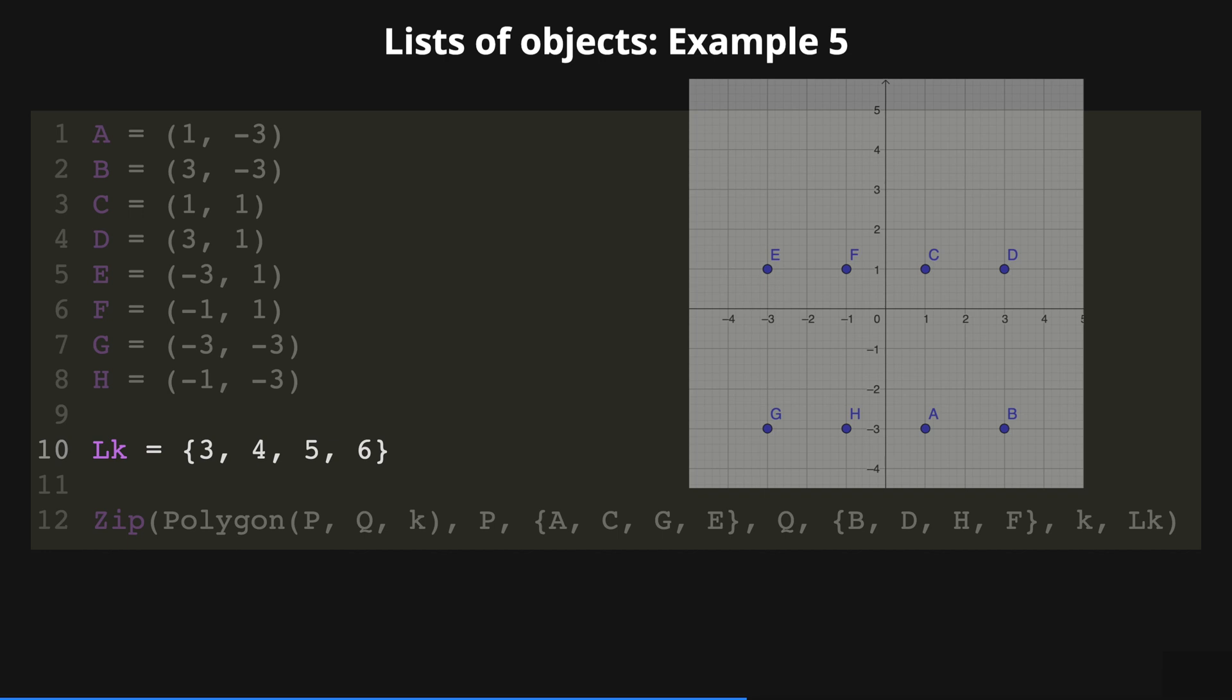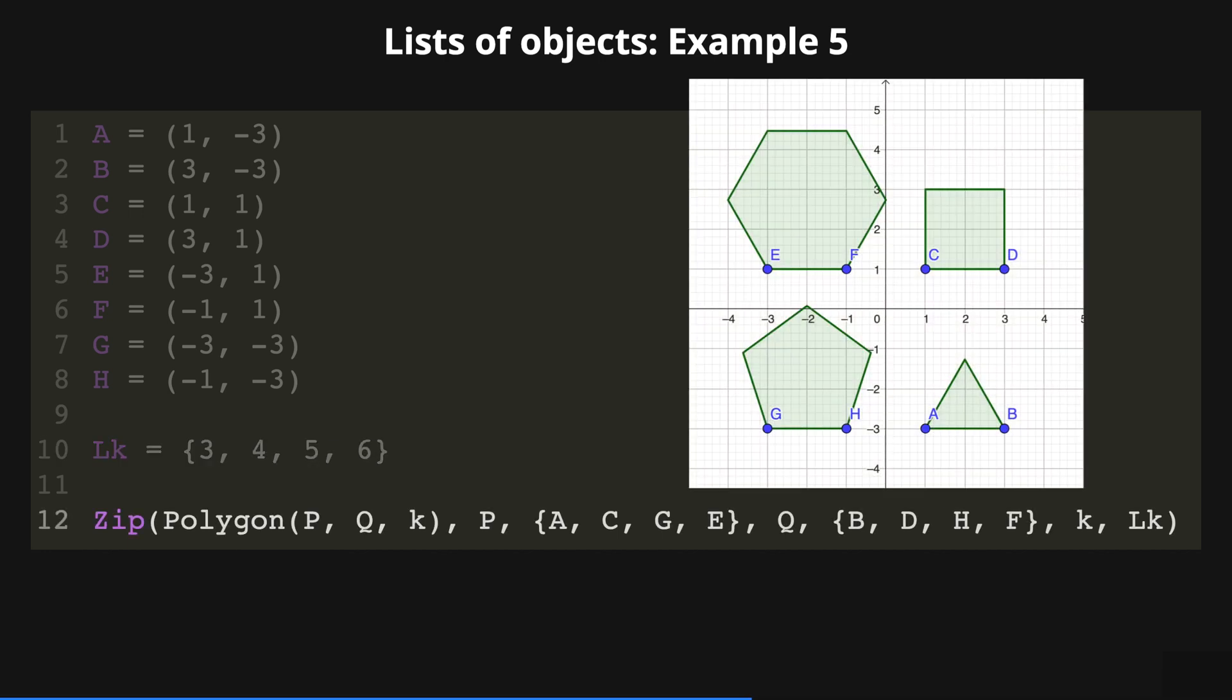With the zip command we can create four regular polygons using the expression polygon with variables P, Q and k. P is a point that belongs to the list A, C, G, E and Q is another point that belongs to the list B, D, H and F. And the variable k belongs to the list Lk.